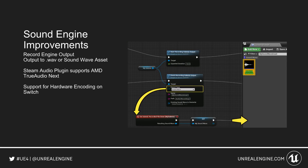The sound engine has had a few improvements. You can now record engine output to wave or sound wave assets. The Steam Audio plugin supports AMD True Audio Next, and there is now hardware encoding support for the Switch.